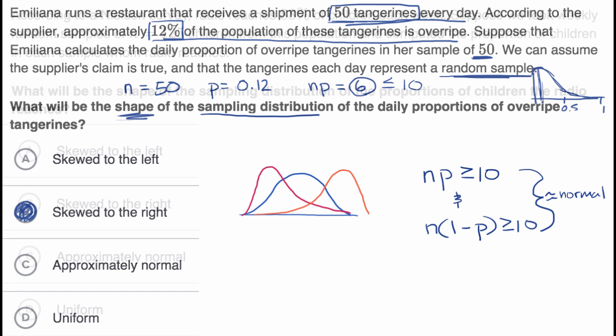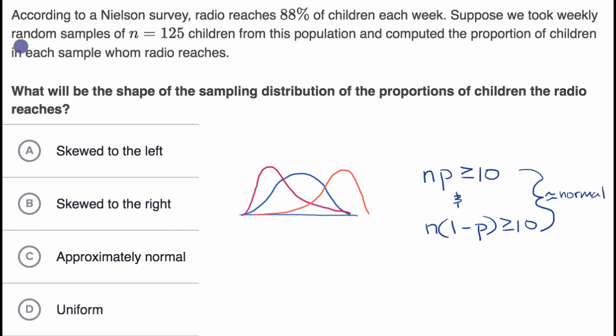Let's do another example. So here we're told, according to a Nielsen survey, radio reaches 88% of children each week. Suppose we took weekly random samples of n equals 125 children from this population and computed the proportion of children in each sample whom radio reaches. Pause this video and see if you can figure it out.